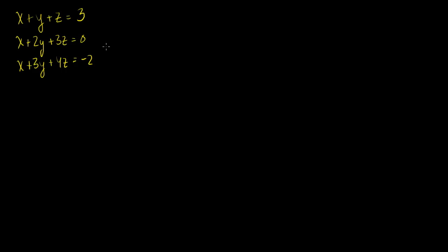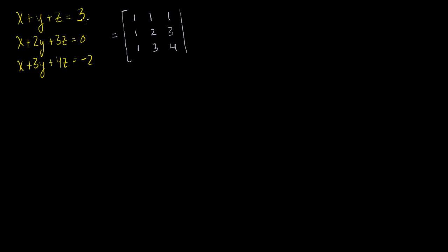So what's the augmented matrix for this system of equations? Three unknowns with three equations. The coefficients of the x terms are 1, 1, 1. Coefficients of the y terms are 1, 2, and 3. Coefficients of the z terms are 1, 3, and 4. And the augmented part — they equal 3, 0, 3, 0, and minus 2.